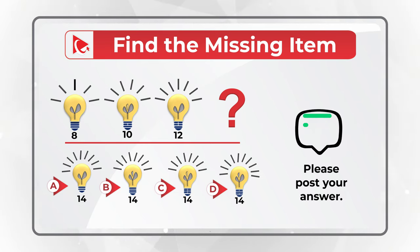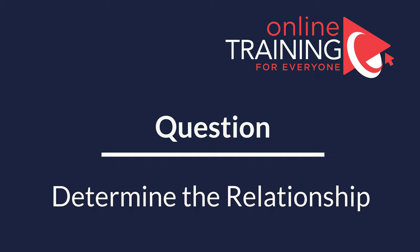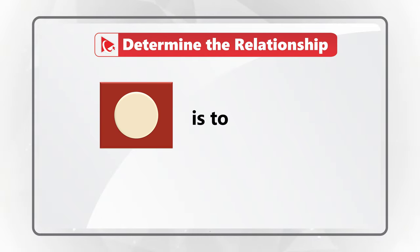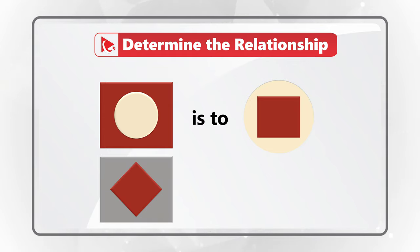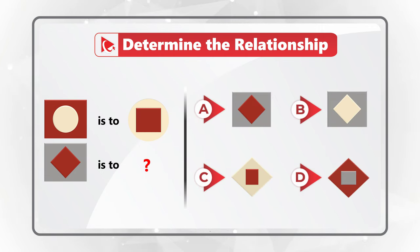Here is an amazing question where you need to determine relationships between objects. You're presented with two pairs of objects. In the first example, a red rectangle with another object inside has an 'is to' relationship to a yellow circle with another object inside. You need to determine the relationship of the gray rectangle with the red diamond inside and find the missing object among four choices: A, B, C, and D.